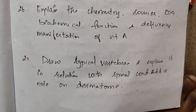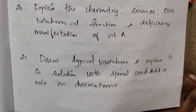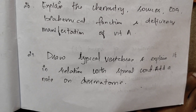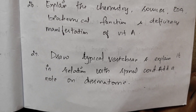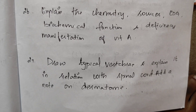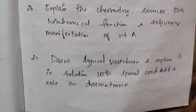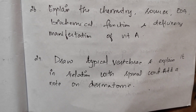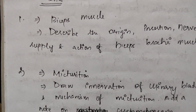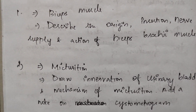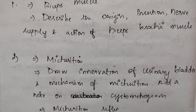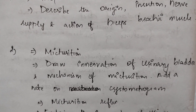Draw a typical vertebra and explain its relation with the spinal cord. Add a note on dermatome. For 5 marks, first important topic: biceps muscle — describe the origin, insertion, nerve supply, and action of the biceps brachii muscle.